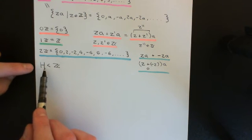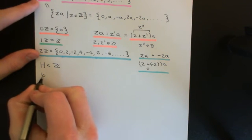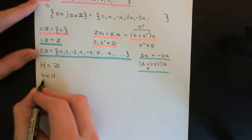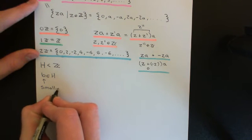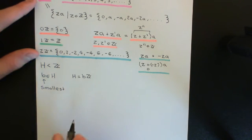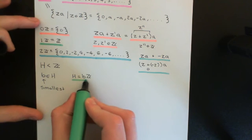So basically if H is not the trivial subgroup 0Z, then it has to contain some positive integers, and therefore it contains the smallest positive integer. Maybe the smallest one might be three — so it might contain zero, not contain one and two, but contain three. More generally, let's call B the smallest positive integer in H. So B is an element of H and it is the smallest positive integer. My claim then is that capital H is actually equal to BZ — the subgroup which is all integer multiples of B.